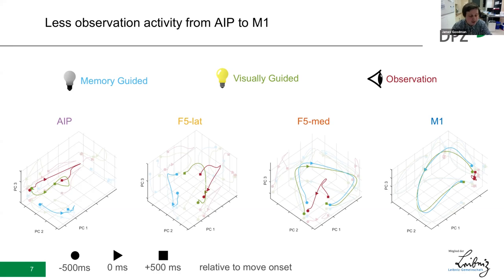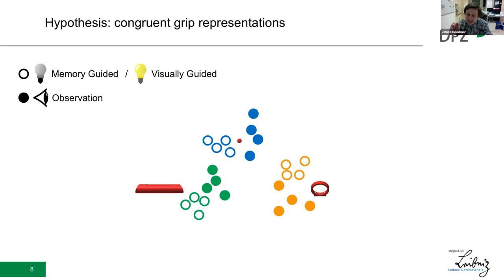While these plots tend to highlight the differences between these tasks, we also see, when using demixed principal components analysis, a substantial overlapping component between action and observation in F5 and AIP. However, an ideal test of motor simulation should come in the form of common object representations rather than merely a common activity pattern that doesn't vary with any of the experimental conditions.